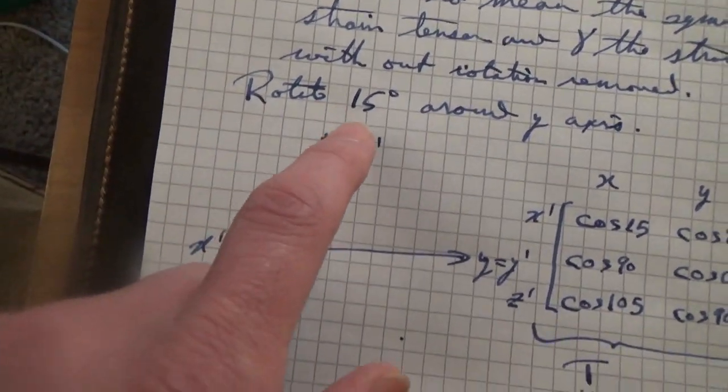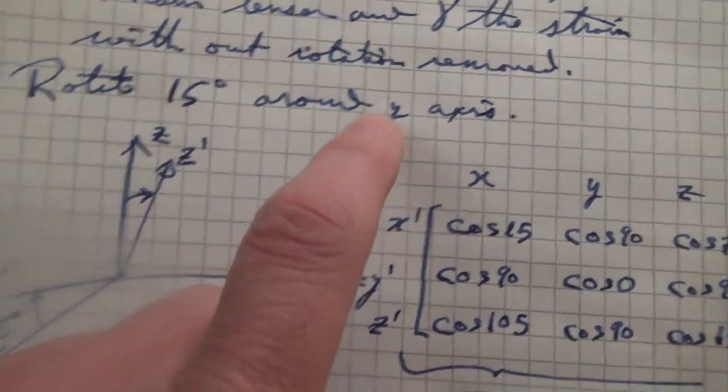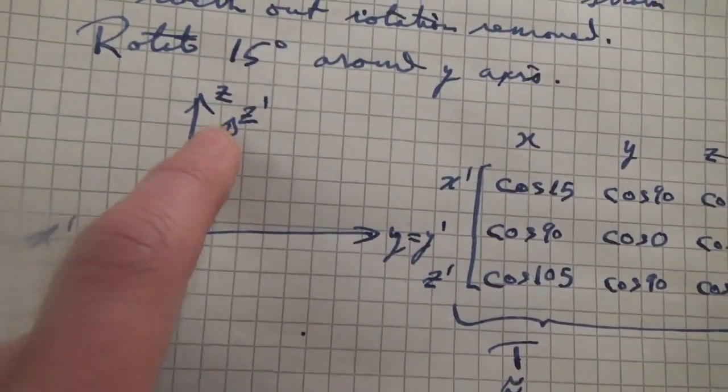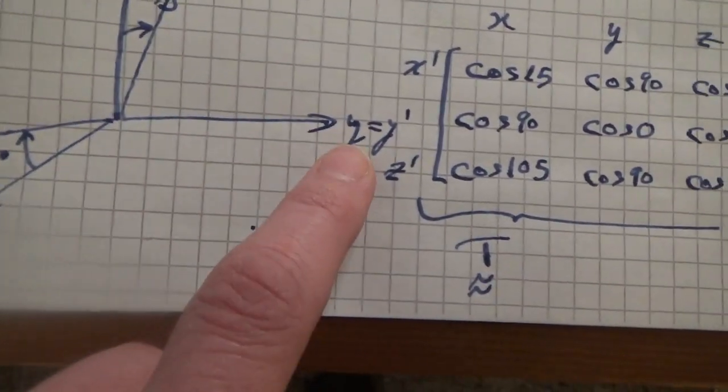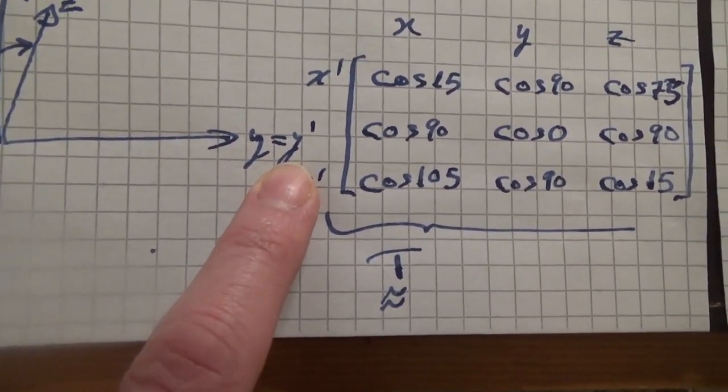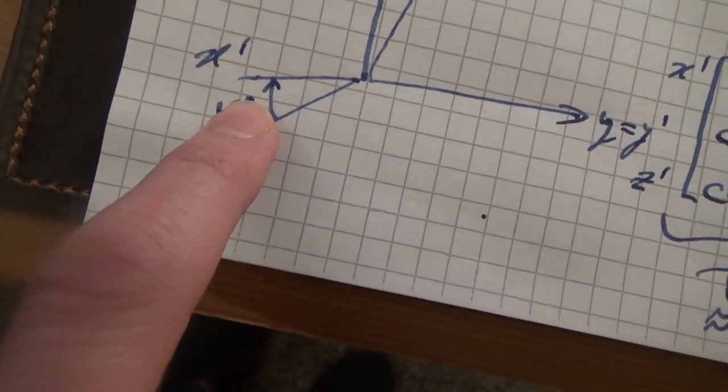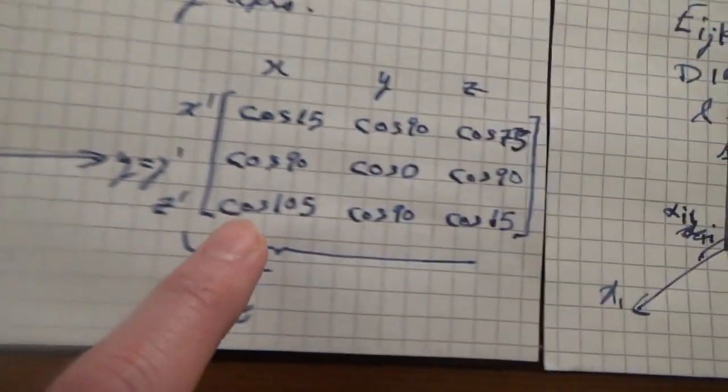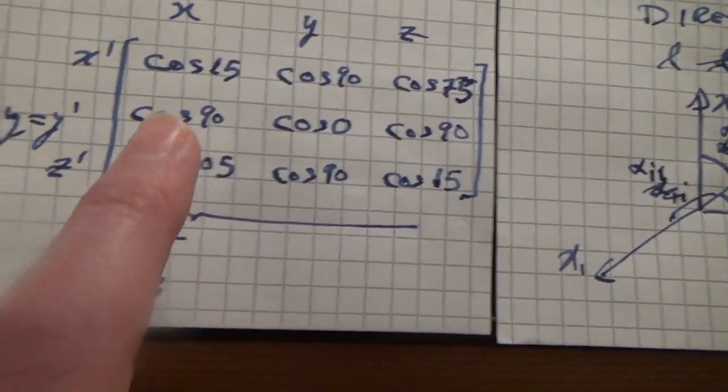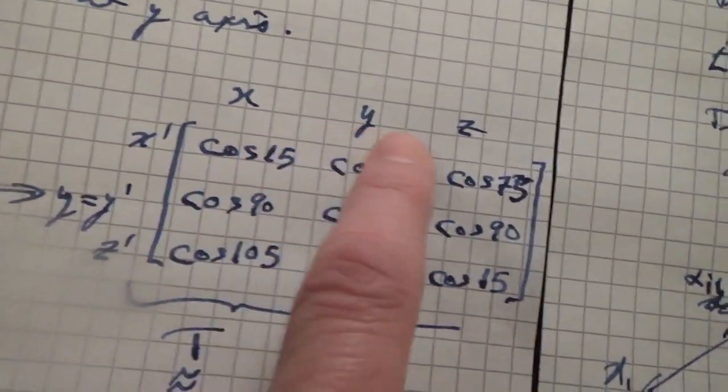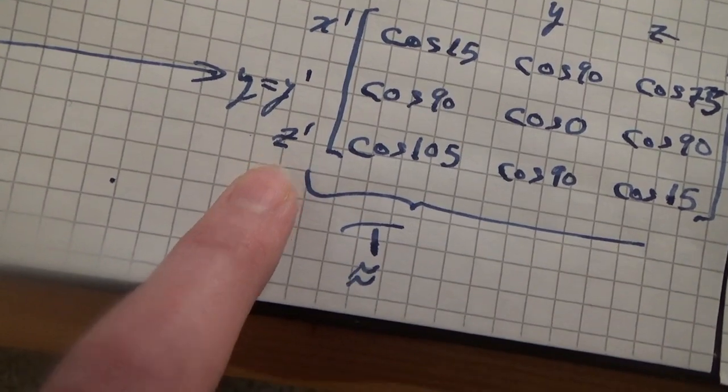Next part of the problem is rotate 15 degrees about the y axis. So if we say our x, y, and z axis are here, our y axis stays y because we are rotating about it. The x axis rotates 15 degrees, the z axis rotates 15 degrees. This is going to be our transformation tensor. So we have cosine - I made these as columns of x, y, and z and rows of x prime, y prime, z prime.